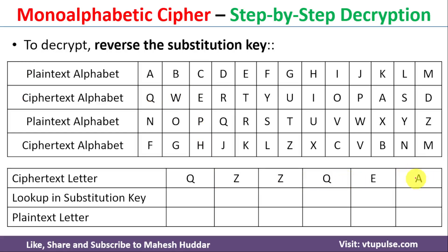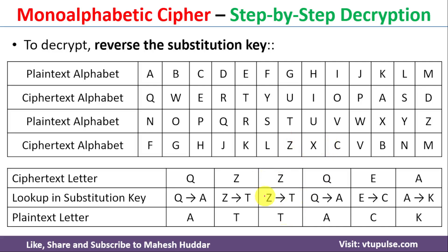Decrypting 'QZZQEA': the first letter 'Q' is replaced by 'A'. In the cipher text alphabet, 'Z' maps back to 'T', and the next 'Z' is also replaced by 'T'. Then 'Q' is again replaced by 'A', 'E' is replaced by 'C', and 'A' is replaced by 'K'. So the decrypted message of 'QZZQEA' is 'ATTACK'. This is how we find the encrypted and decrypted message using monoalphabetic cipher.